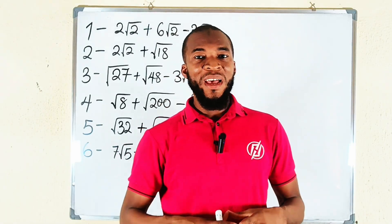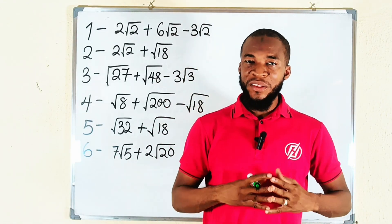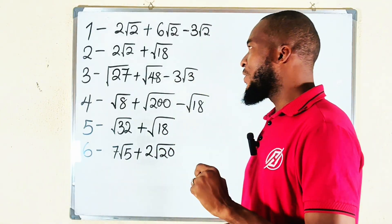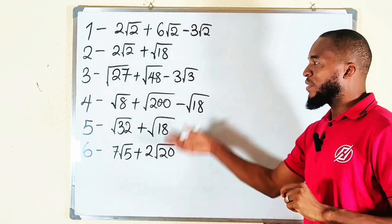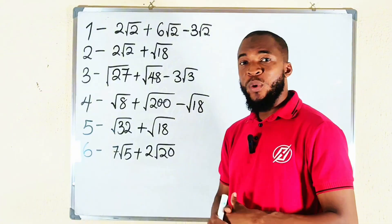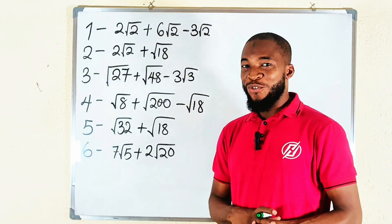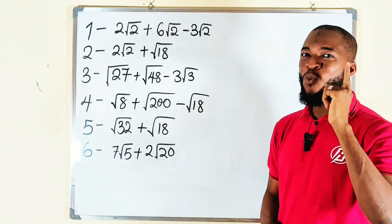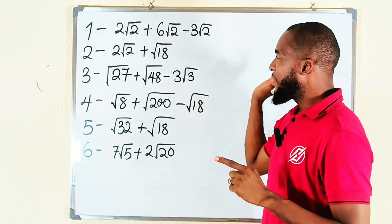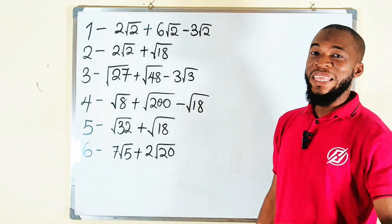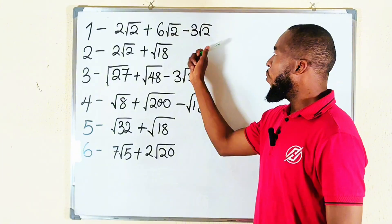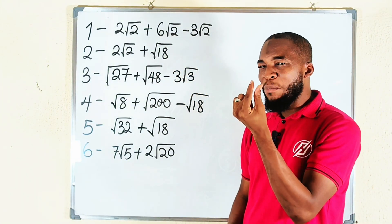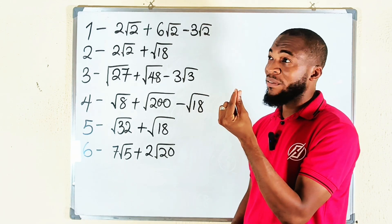Hello everyone. In this tutorial I am going to show you how to add surds together. Don't forget to like, comment, and share with other people. We have six problems here. You should know that you can only add similar surds. Surds are said to be similar if and only if all the terms contain the same number under their radicals.